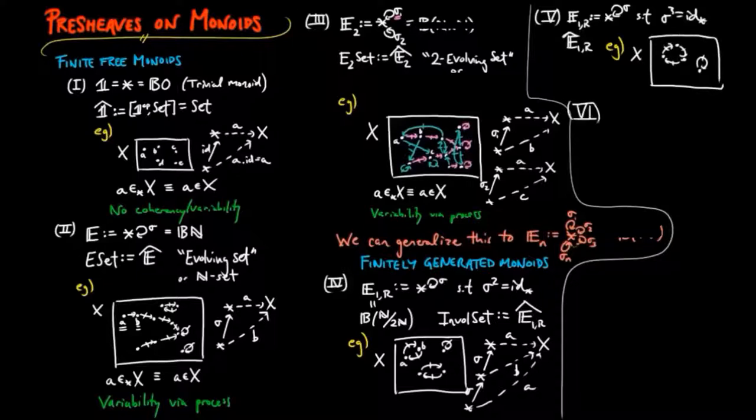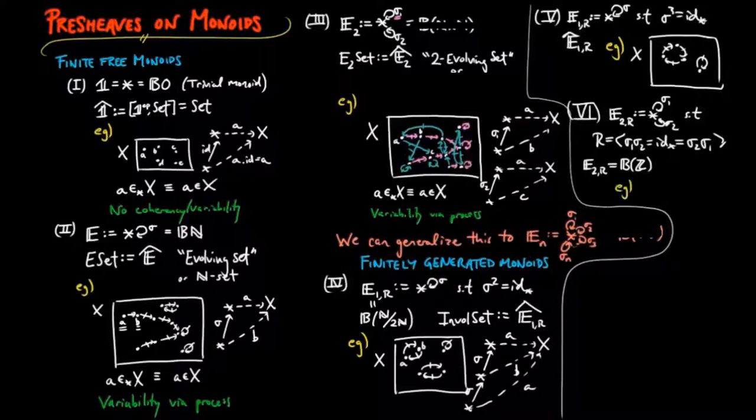We set E2R to be the category generated by two non-identity morphisms, sigma-1 and sigma-2, such that sigma-2 is the inverse of sigma-1. In other words, E2R is the monoid of additive integers. So a container X will have a sigma-1 process, which is inverted by a sigma-2 process.